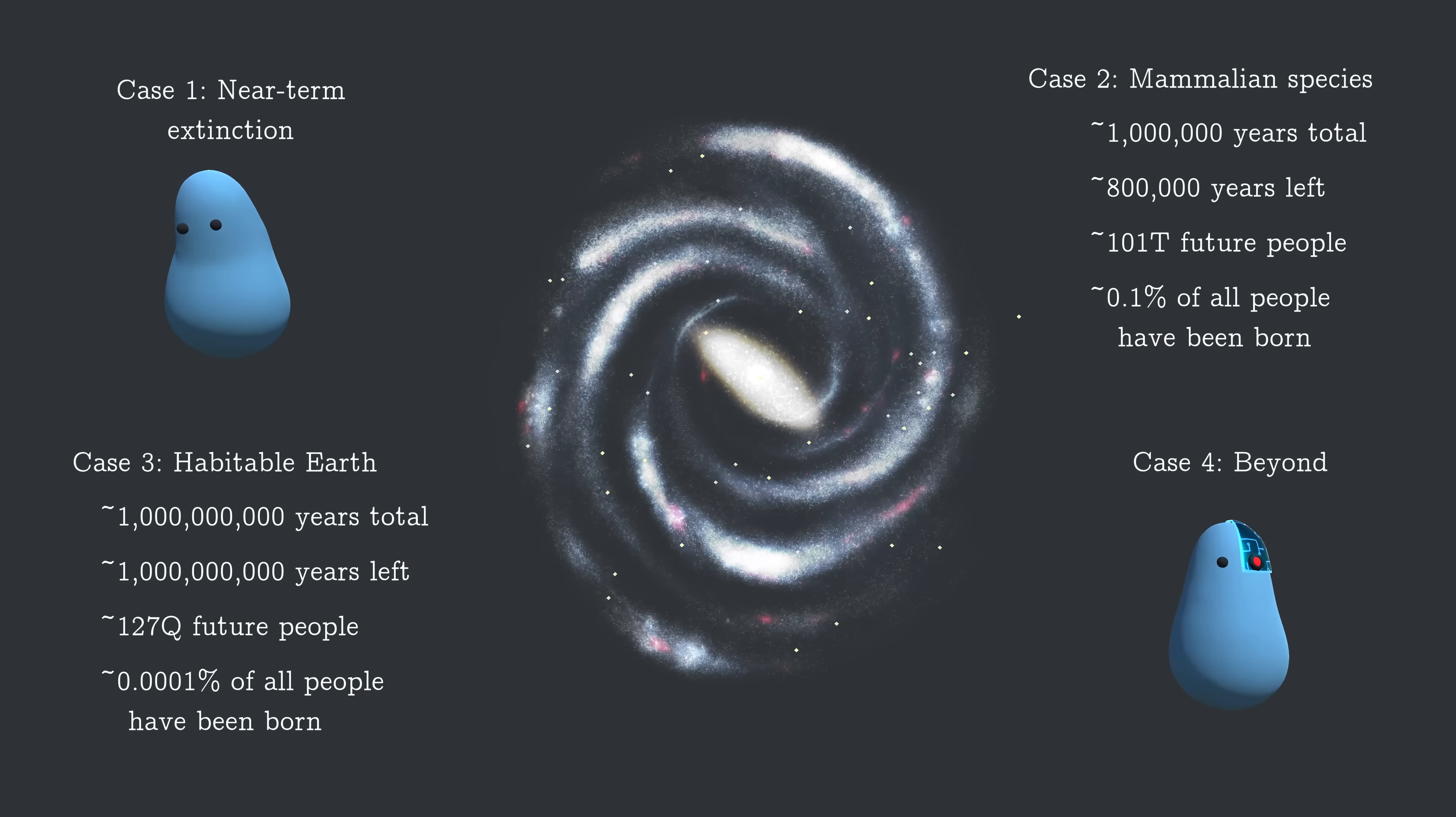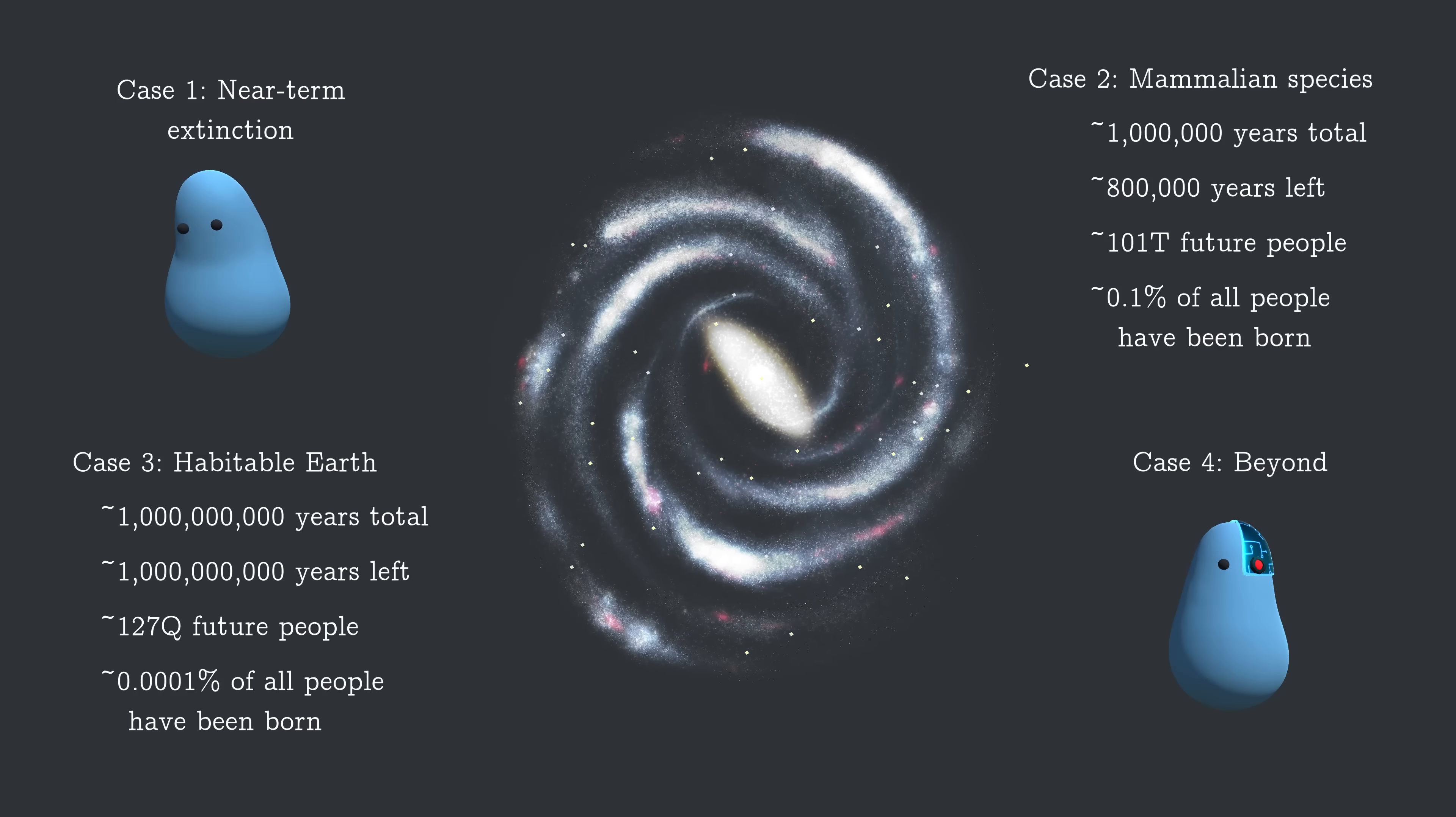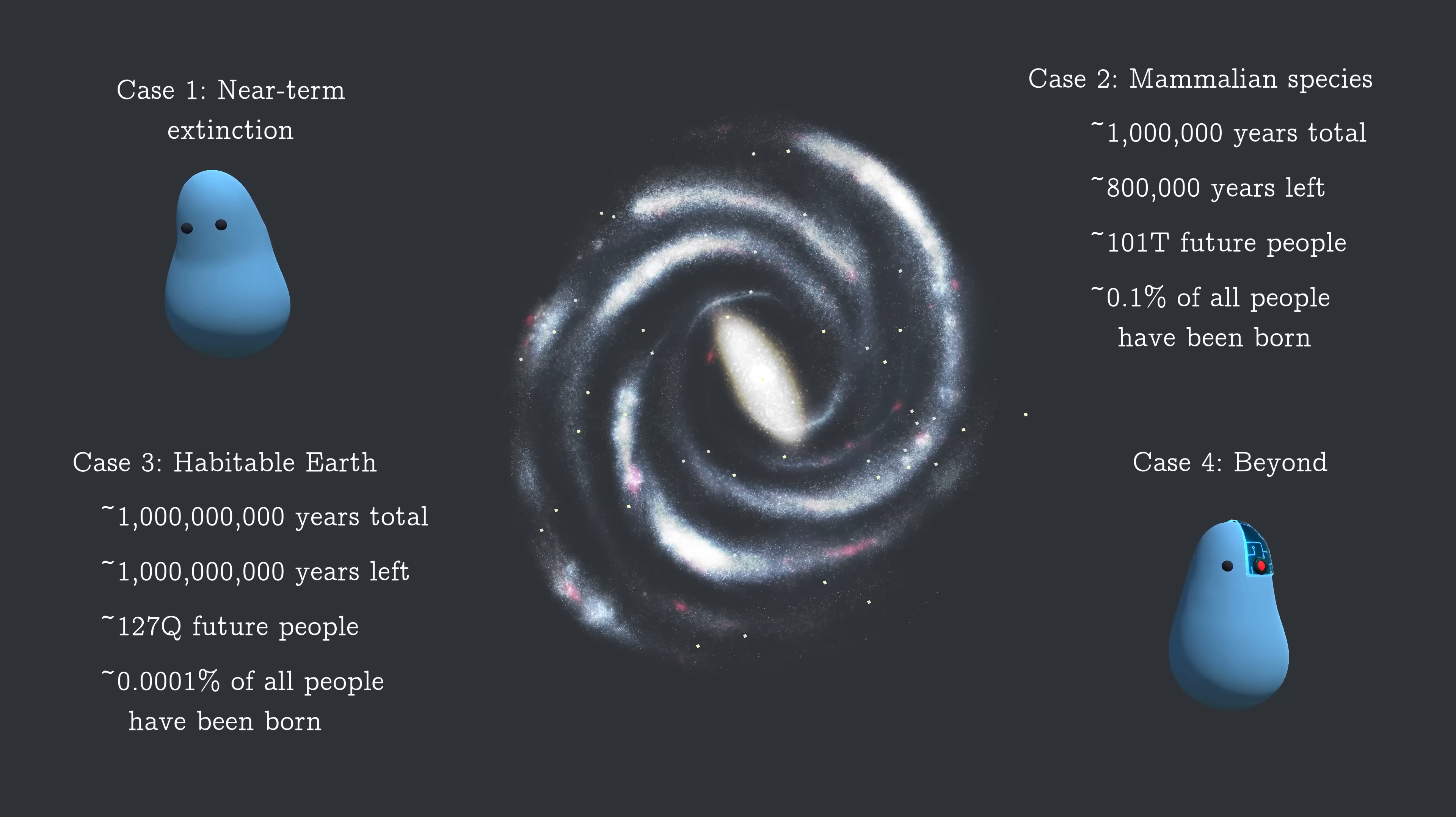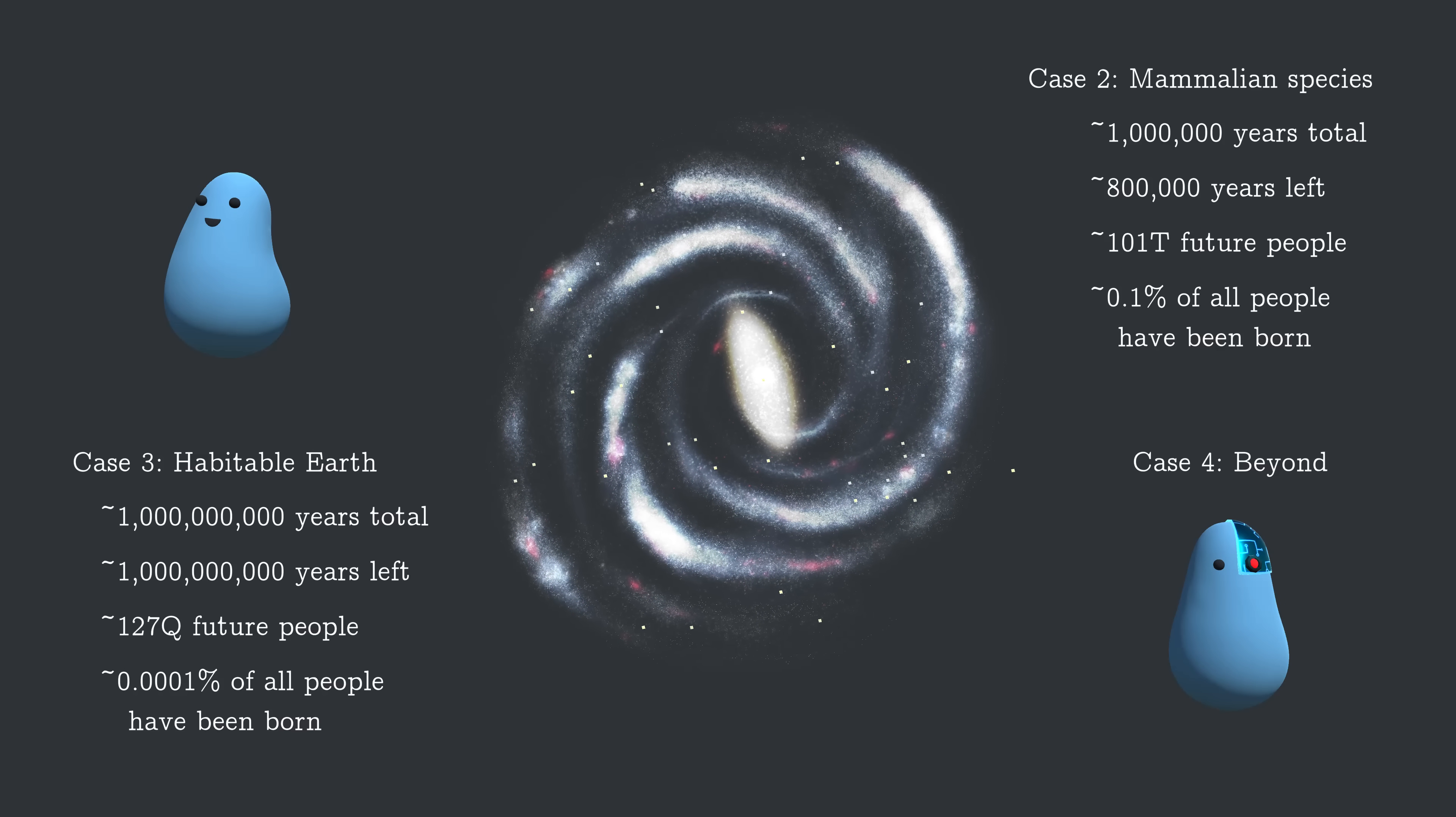So we have this huge range of possibilities, from a very short future all the way to a potential future that makes 100 quadrillion people seem small. It's hard to know what to make of this. The takeaway I find striking though, is that as long as we don't mess things up ourselves, we're very early in the history of humanity, and others will look back on us as an ancient civilization.